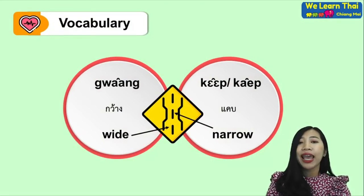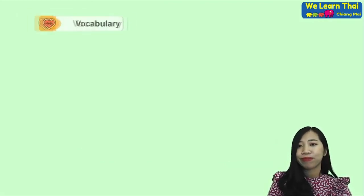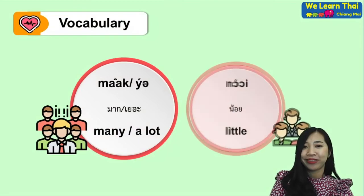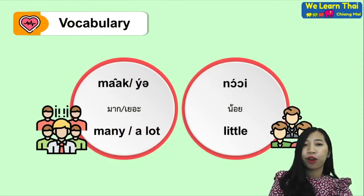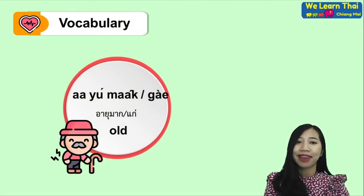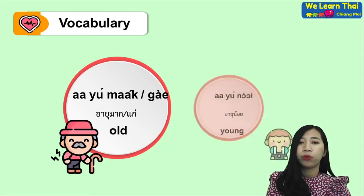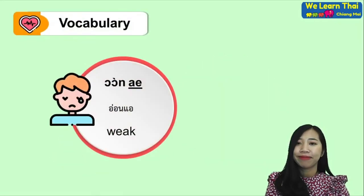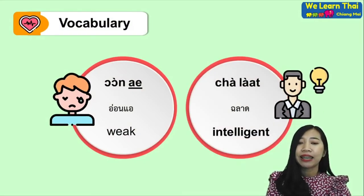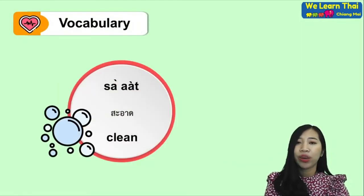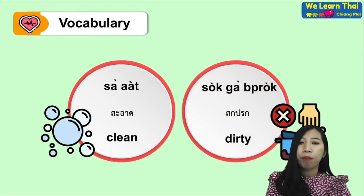We have 'khaeb' — narrow, 'maak' or 'yeh' — many or a lot, 'noi' — little. 'Kae' — old, 'ao noi' — young, 'on' — weak, 'chalat' — intelligent, 'saat' — clean, 'sokkaprok' — dirty.